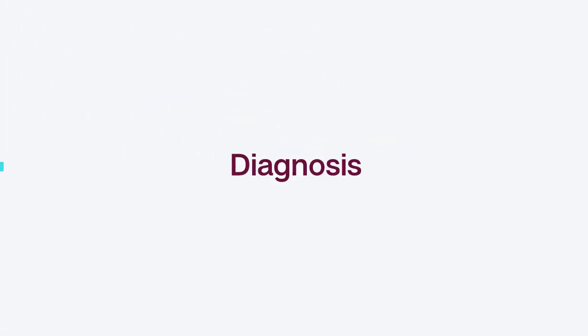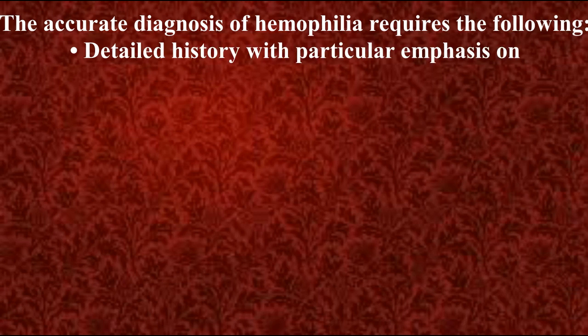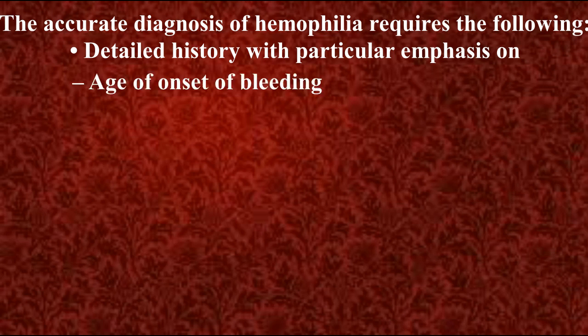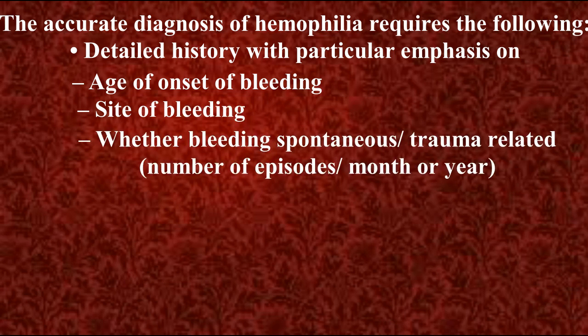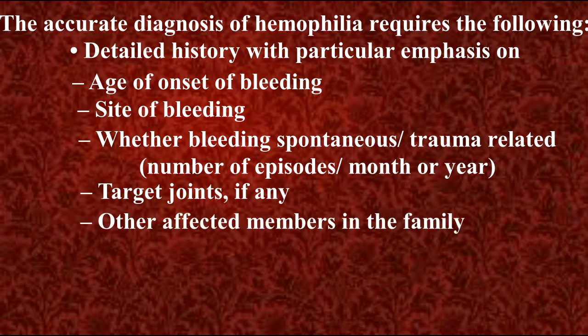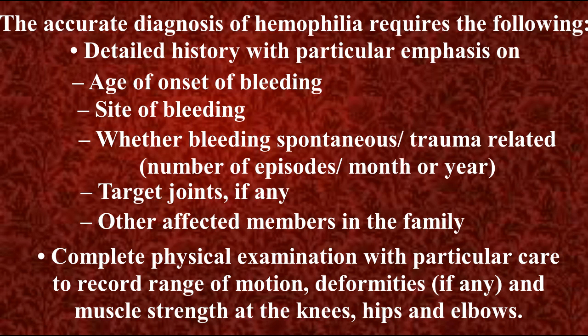Accurate diagnosis of hemophilia requires a detailed history with particular emphasis on: age of onset of bleeding, site of bleeding, whether bleeding is spontaneous or trauma-related, number of episodes per month or year, target joints if any, and other affected family members. A complete physical examination should record range of motion, deformities if any, and muscle strength at the knees, hips, and elbows.